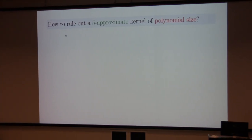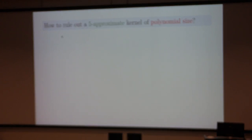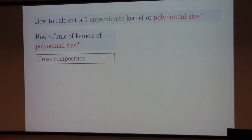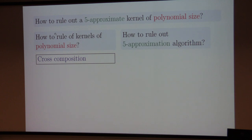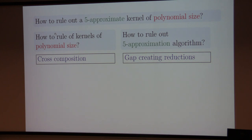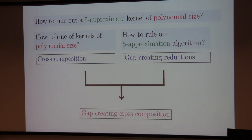The way to rule out a polynomial kernel in the normal setting is via cross-composition — we do a cross-composition starting from some NP-hard problem and argue we cannot get a polynomial kernel. And to rule out a polynomial-time 5-approximation algorithm, one method is gap-creating reductions, where you create a gap so that even an approximate solution cannot distinguish the promised versions of the problem. What we do is combine these two together to get something called a gap-creating cross-composition.